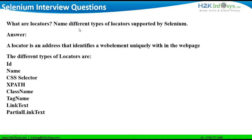Now let us look at the second part of the question, which is: what are the different types of locators supported by Selenium? You can answer by naming the different locators: ID, name locator, CSS selector, XPath locator, class name, tag name locator, link text, and partial link text locator.